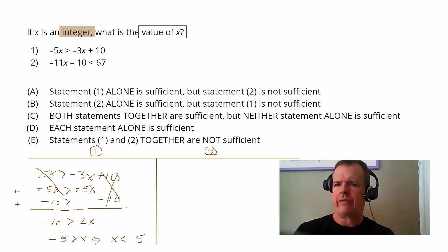So that clearly is not enough information because X can be any integer, because remember they told us X is an integer, any integer less than negative five. So we can eliminate A and D from our answer choices, because we showed statement one is not sufficient.